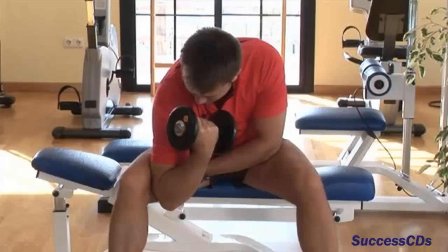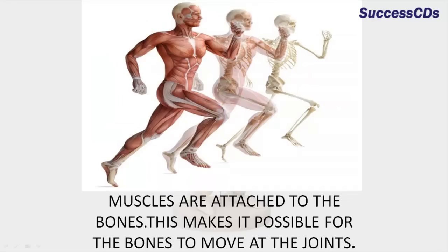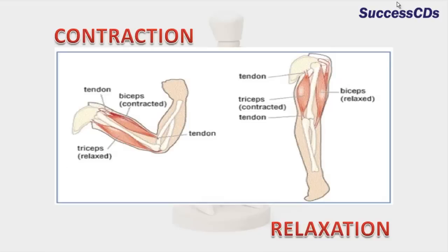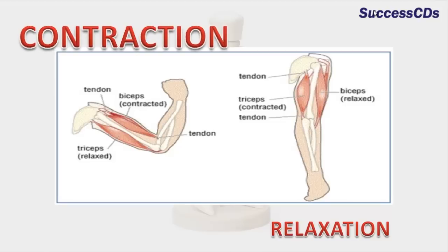Have you seen people using weights while exercising? They use weights to develop the muscles. Muscles are attached to the bones, which makes it possible for the bones to move at the joints. The muscular system consists of muscles which are joined to the bones with the help of tendons and help in body movement. The muscles cover the entire skeleton. Muscles have the property of contraction and relaxation, which is responsible for the movement of bones.